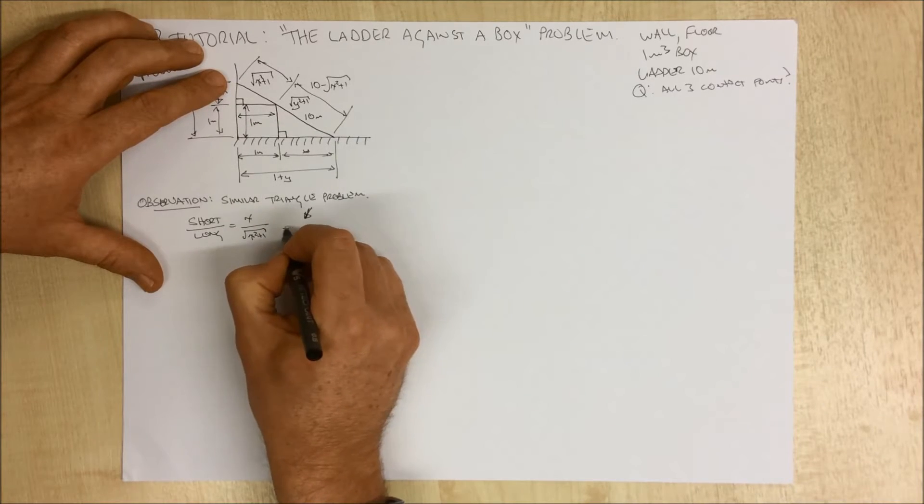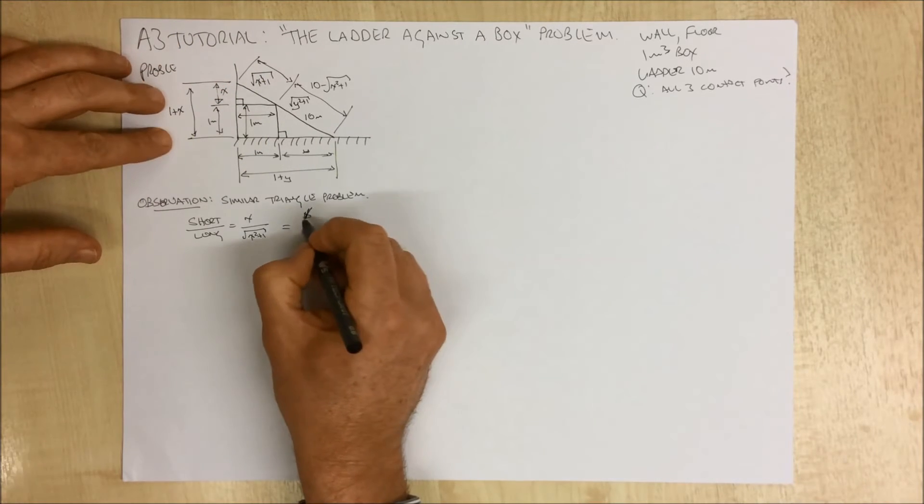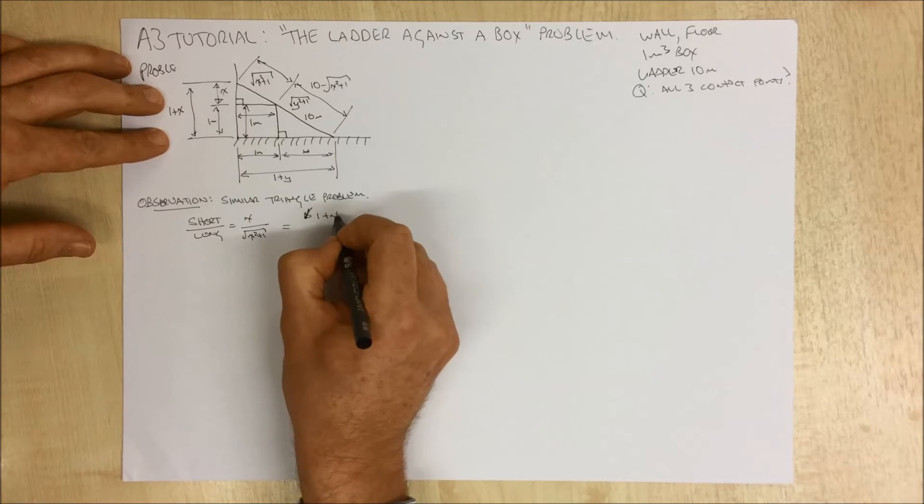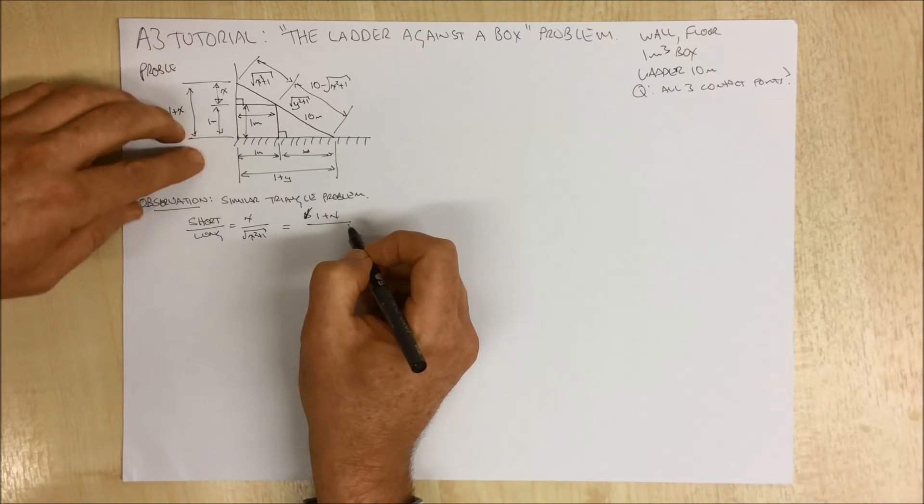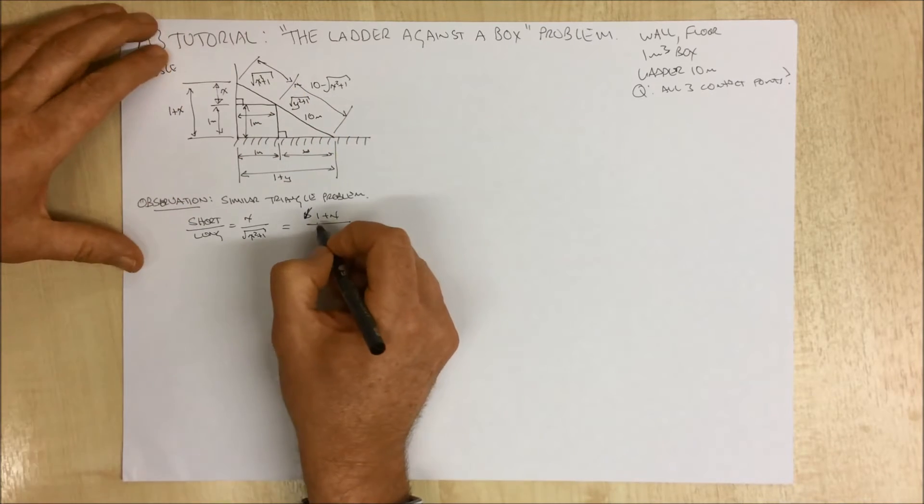And that relationship equals, if we look at the big triangle, the short leg here is 1 plus x, and the long leg is our 10.